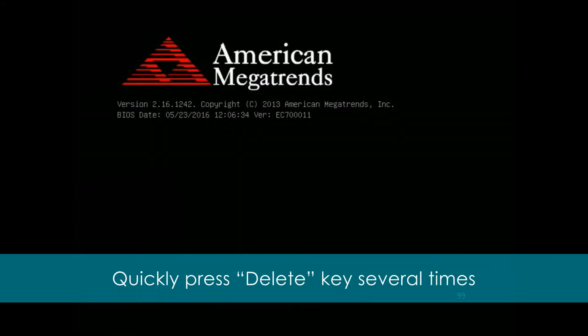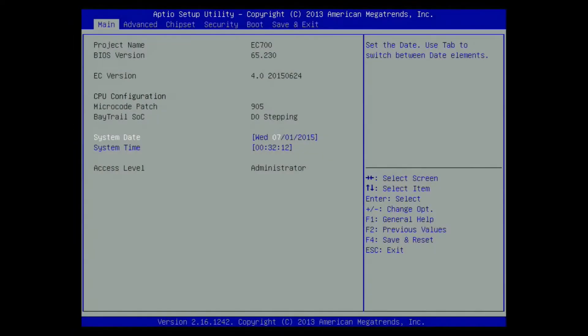First, restart your computer, or turn it on if it is off. Second, quickly press the Delete key several times to enter the BIOS Setup Utility page. The BIOS name will be shown at the top of the BIOS Setup Utility page.